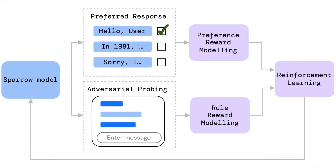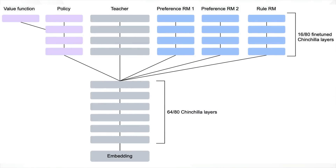These rules are enforced through a policy guided by reinforcement learning from human feedback — RLHF — which checks what's happening throughout the conversation. The first diagram shows the pipeline between the Sparrow model, the reward model, the rule reward, the policy, and the reinforcement learning. The second diagram shows the shared parameters: a fine-tuned version of Chinchilla covering 16 of the 80 layers, with the standard 64 layers remaining.